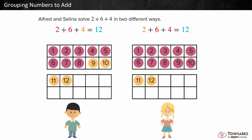Alfred and Selena added in different orders but still got the same sum. Let's try using an open number line to show how we can group numbers in different ways when adding. 3 plus 4 plus 7.